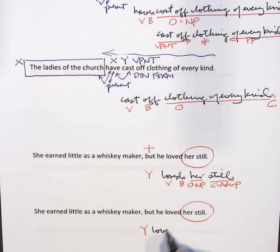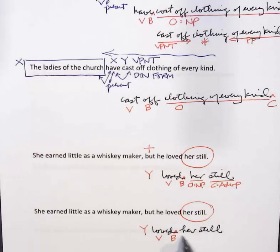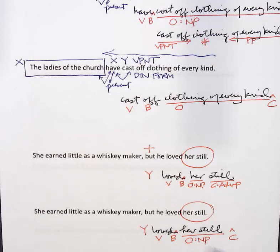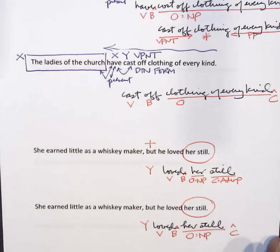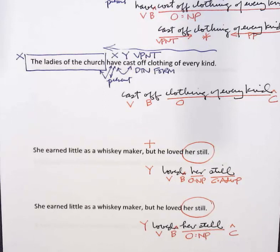Now let's analyze it a different way. Taking the same words, the verb is 'loved', no particle, and the object is 'her still' — a noun phrase — with the complement place empty. In this second interpretation, 'her still' as a noun phrase means that he loved the apparatus she used to make her whiskey, because a still is a machine for making alcohol.